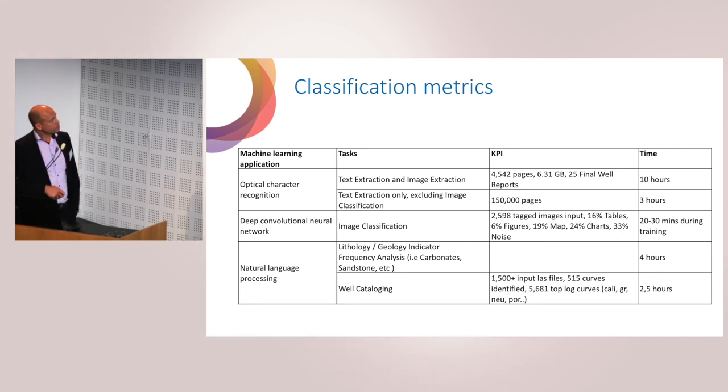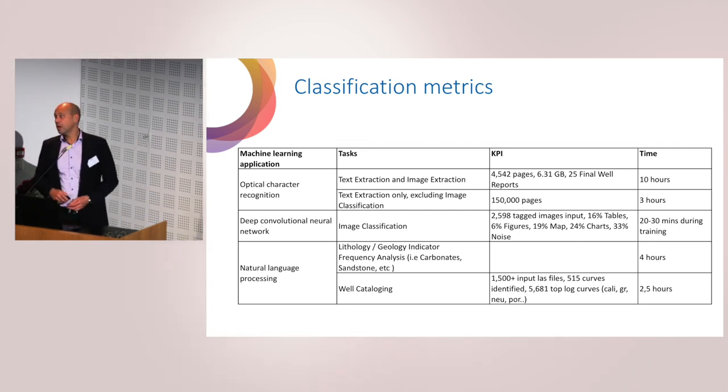Just to show you how fast this can be done. Optical character recognition, text extraction: 5,000 pages takes about 10 hours. Extract excluding images, 150,000 pages, we're down to three hours. Image classification, nearly 2,500 images, 20 to 30 minutes. Natural language processing for lithology and geology indicators, about four hours. 1,500 LAS files, about two and a half hours. Compared to any manual work you can do, this is so much faster.